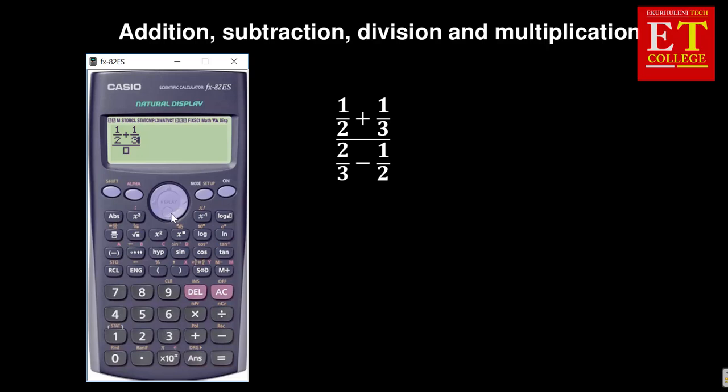Then you go down and then you put a fraction, you've got two over three, and you play forward with a minus and with a fraction, one over two. And the answer is five.